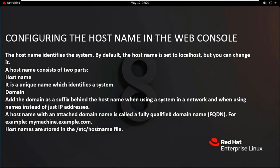Configuring the host name in the web console. What is a host name? The host name identifies the system. By default, the host name is set to localhost, but you can change it. A host name consists of two parts: the host name, which is a unique name identifying a system, and the domain. You can add the domain as a suffix behind a host name when using a system in a network and when using names instead of just IP addresses. A host name with an attached domain name is called a Fully Qualified Domain Name, or FQDN. For example: mymachine.example.com. Host names are stored in the /etc/hostname file.